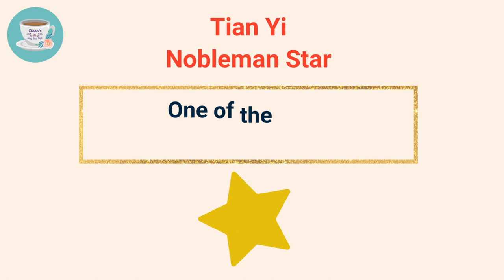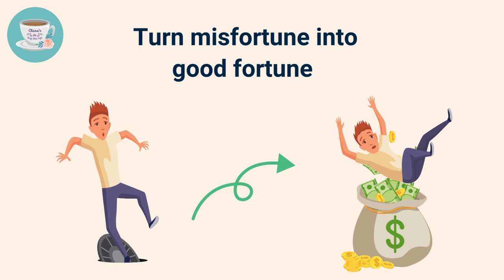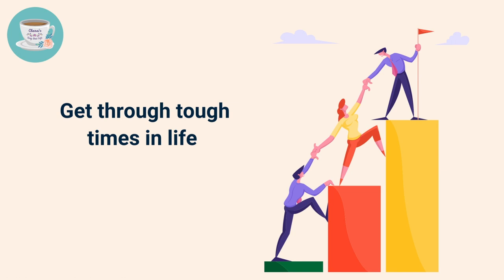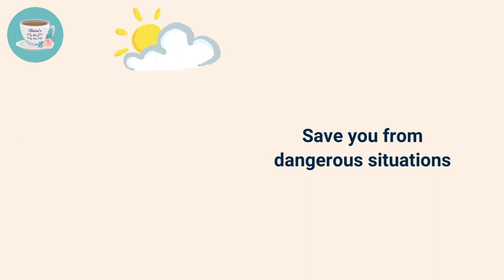Tianyi Nobleman star is one of the most auspicious stars in Ba Zi. Nobleman star can turn misfortune into good fortune. If there are Tianyi Nobleman stars in any of your earthly branches — namely the year branch, month branch, day branch, or time branch — it means there will be people helping you get through tough times in life. Nobleman star can save you from dangerous situations or provide you opportunities when you think there was no hope.